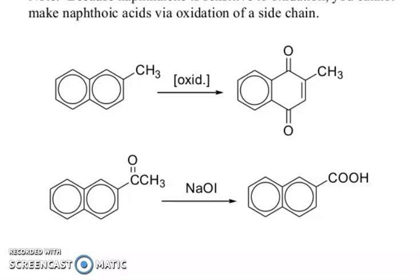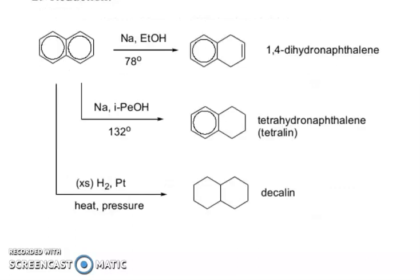You can also see the conversions of naphthoquinone to oxidation products. Reductions: naphthalene undergoes reduction with sodium/ethanol to form 1,4-dihydronaphthalene. In the presence of sodium and isopropanol, it gives tetrahydronaphthalene (tetralin). In the presence of H2/platinum under heat and pressure, decalin is formed.